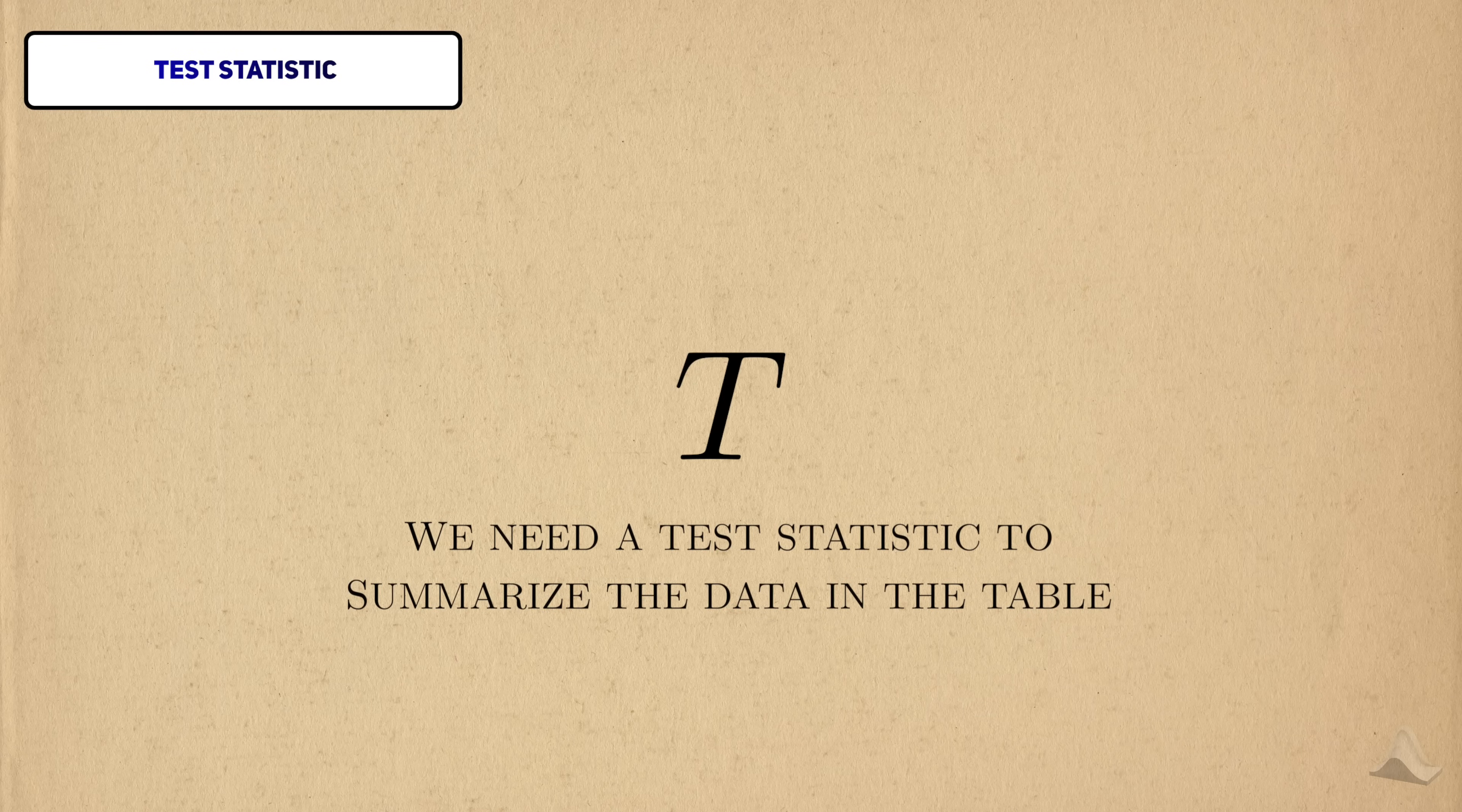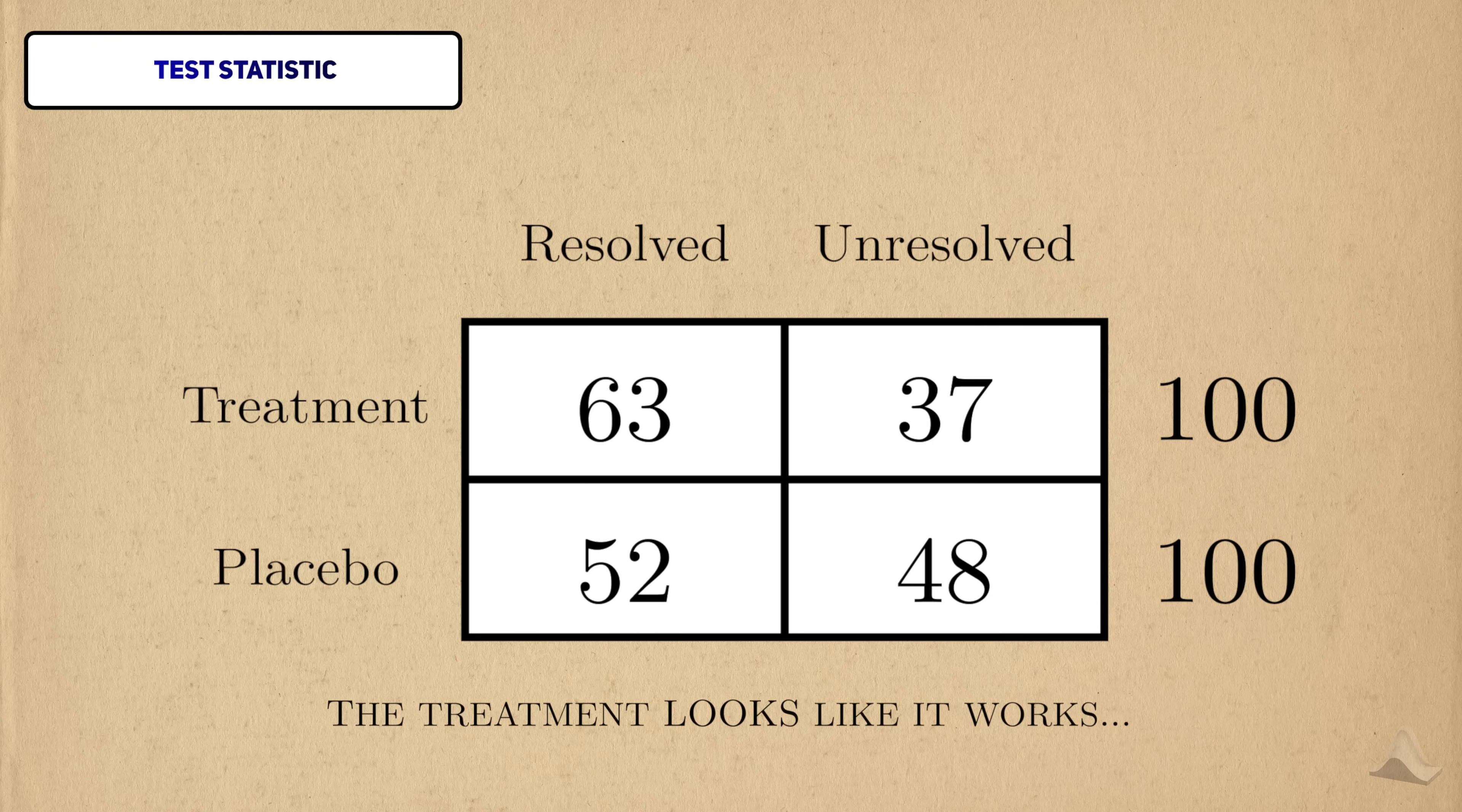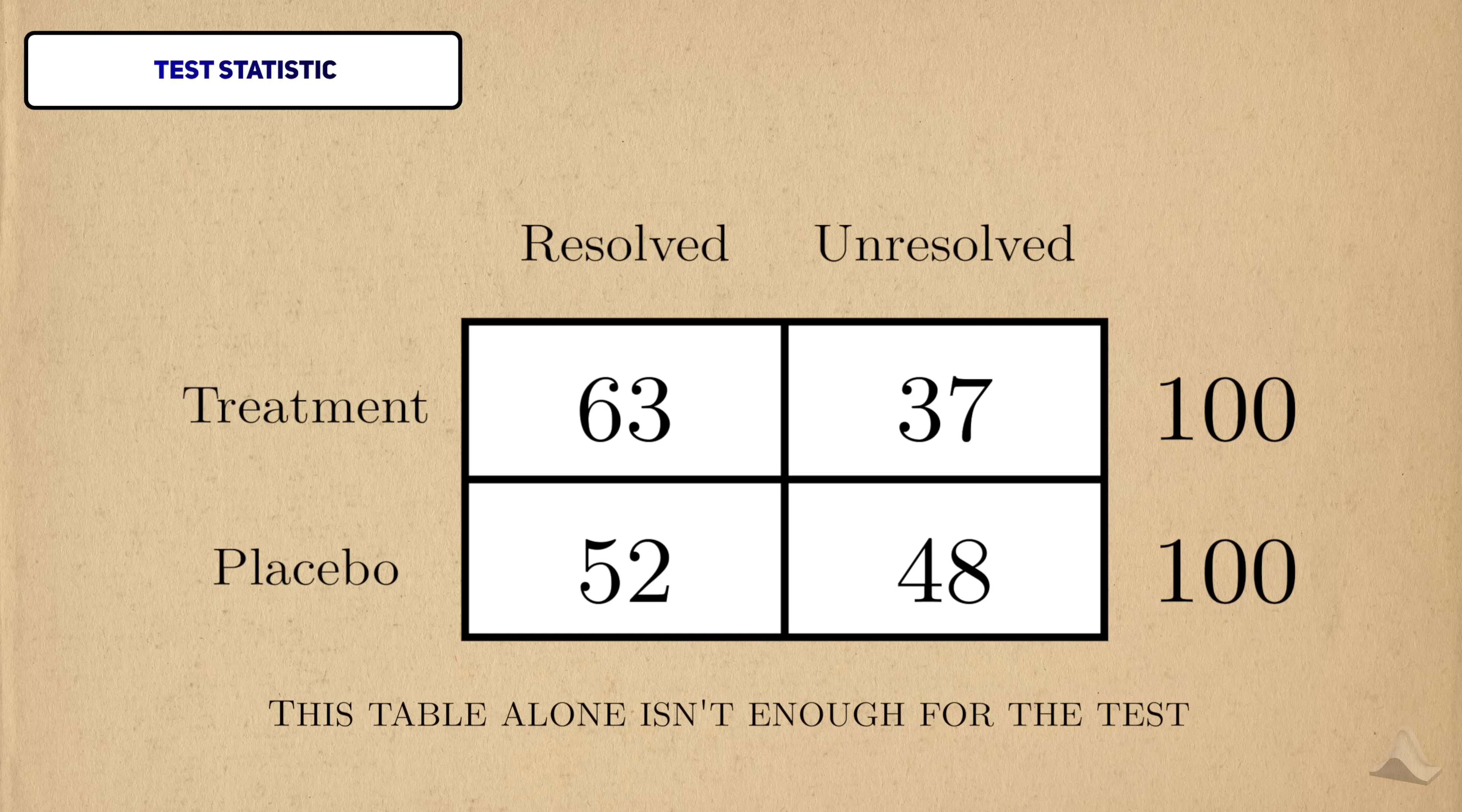We need to construct a statistic based off the data in the table. For demonstration purposes, we'll use the following data to work through the hypothesis test. You can see that the treatment group has more people whose migraines go away, which is promising, but thanks to randomness, there's still a small chance that we can see data like this, even when the two treatments work the same. It's not enough to work with our observed data alone.